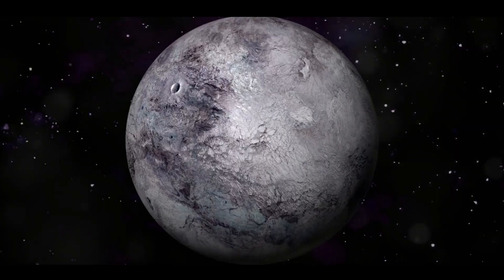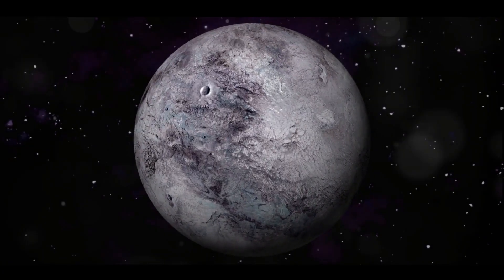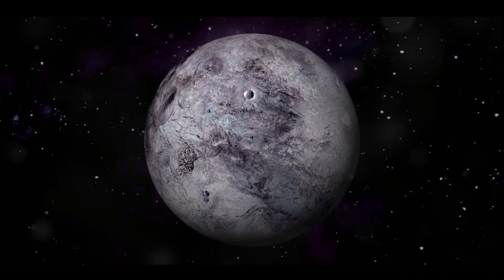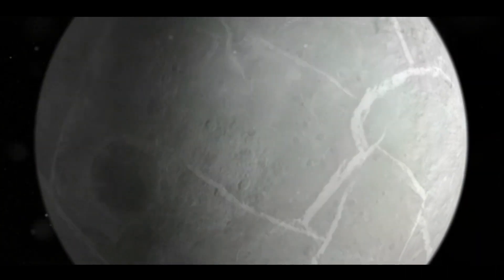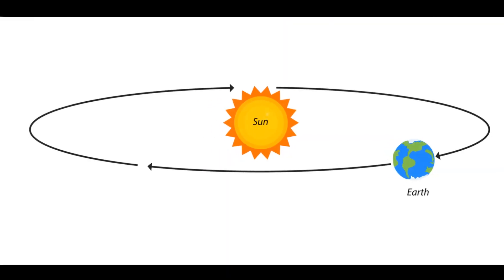Eris has one solitary moon, Dysnomia, named after the Greek goddess of lawlessness and the daughter of Eris in mythology. Dysnomia orbits Eris once every 16 days, providing a celestial dance that's mesmerizing to imagine.